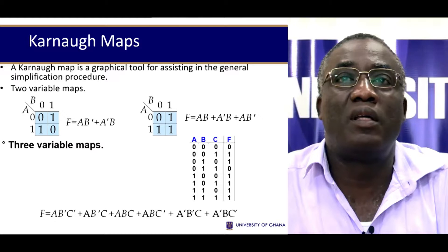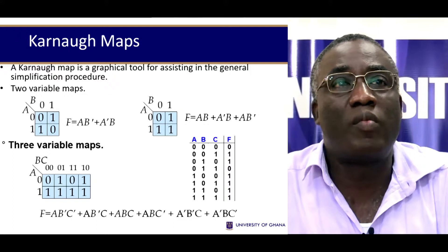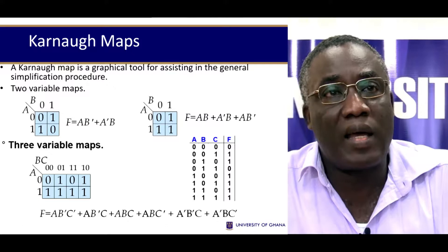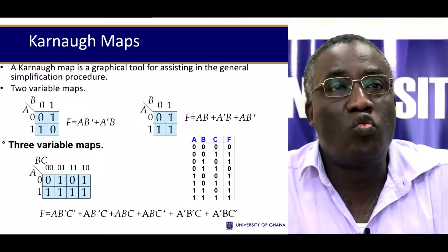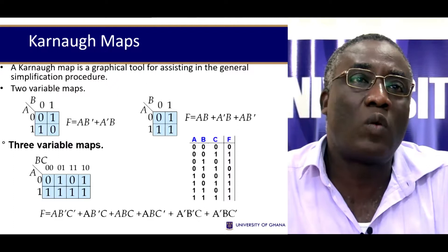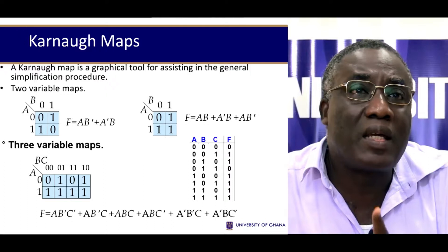If you have a three-variable map such as this, and the positions where the ones are in these places as indicated, notice this. Normally when you write the combinations for b and c, you would have gone from 00, 01, 10, and 11. But notice that here you went from 00, 01, then 11, and then 10. This is where gray code is being used.